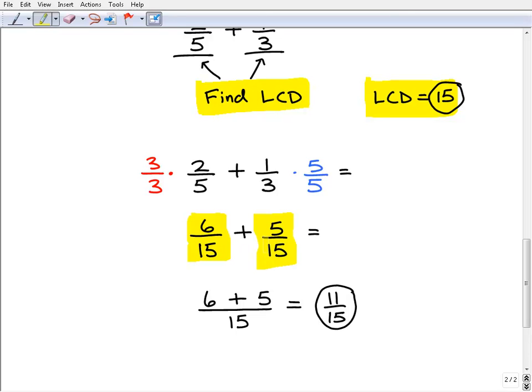And the way you do that, if you recall, is we have to look at our current denominators. Use a different color over here. We have to ask ourselves what number would I have to multiply my current denominator by to get to that LCD.